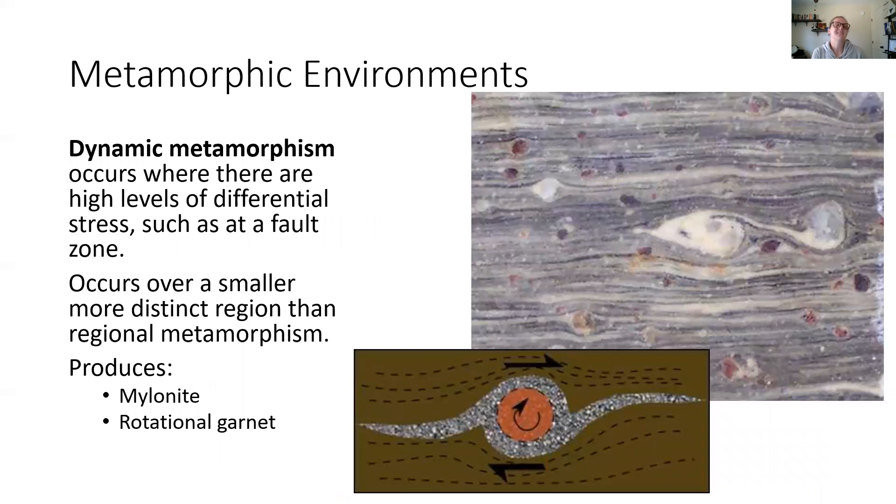Dynamic metamorphism, this can create some really beautiful patterns. This happens when you have high levels of differential stress. So you're probably going to find that in a fault zone or something like that, anywhere where two rock bodies are moving in different directions, rubbing against each other, creating that shear stress.